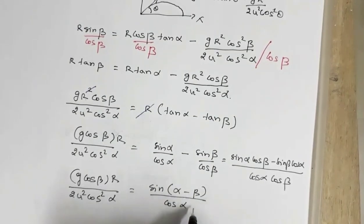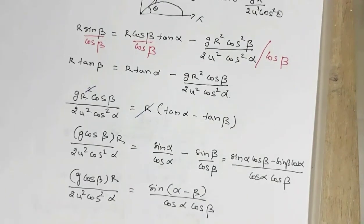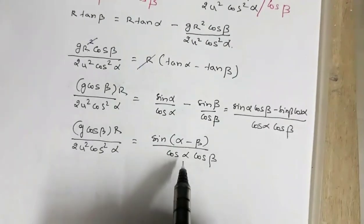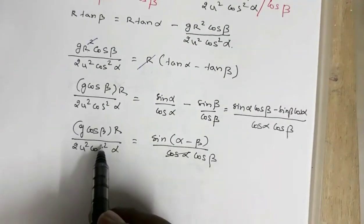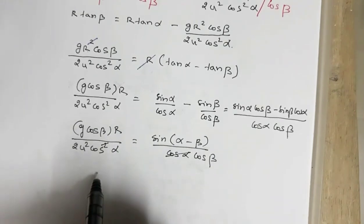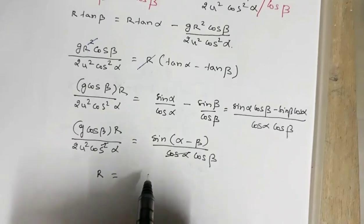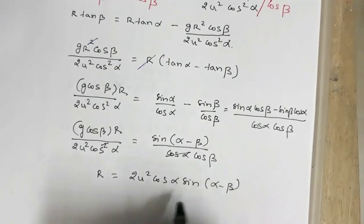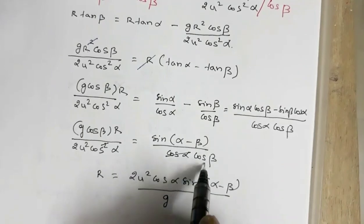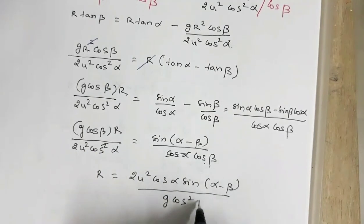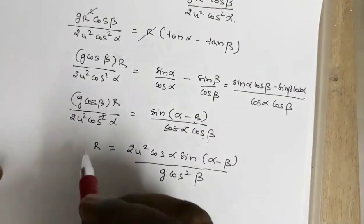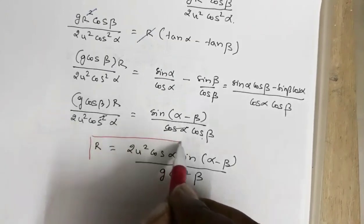Since one cos(alpha) from cos²(alpha) cancels with the cos(alpha) in the denominator, rearranging gives the range: R = 2u²·cos(alpha)·sin(alpha minus beta) divided by g·cos²(beta). This is the expression for range along the inclined surface.